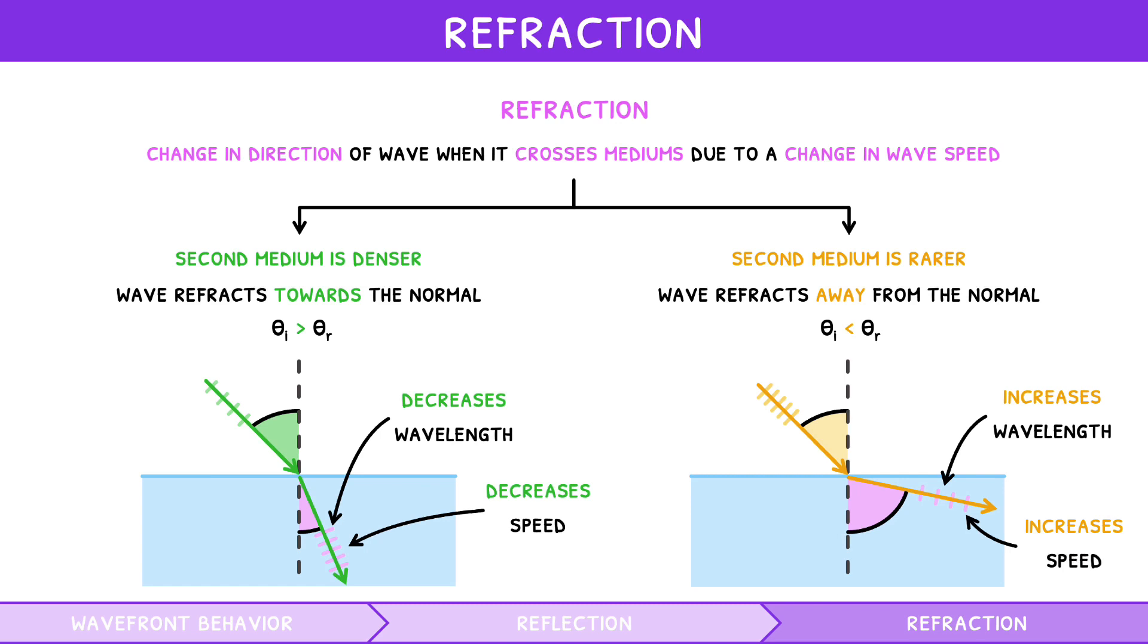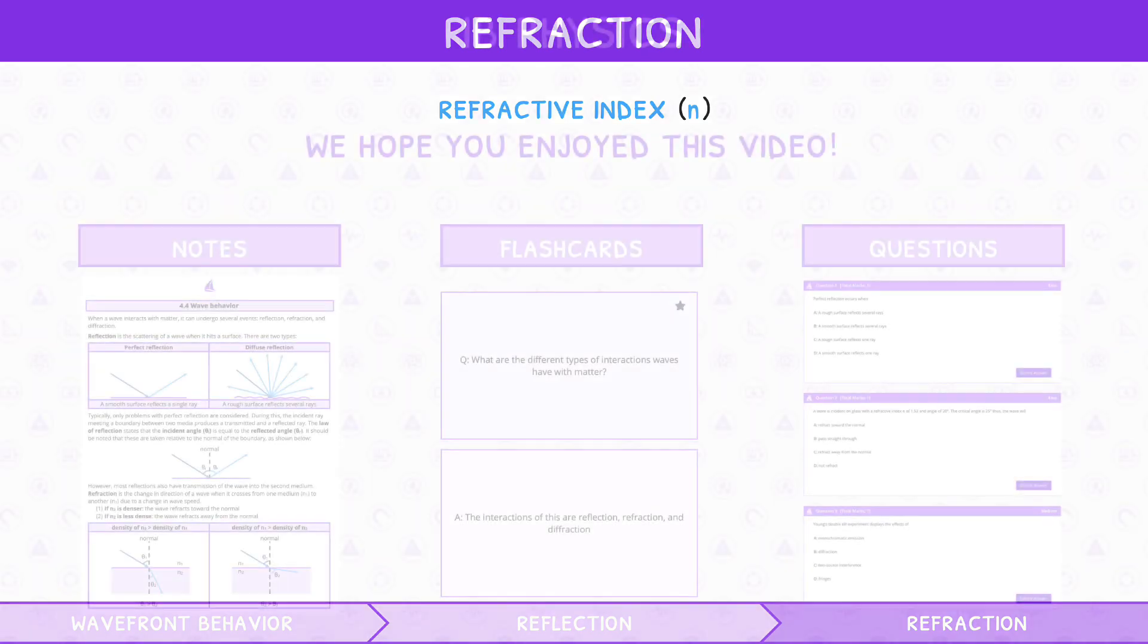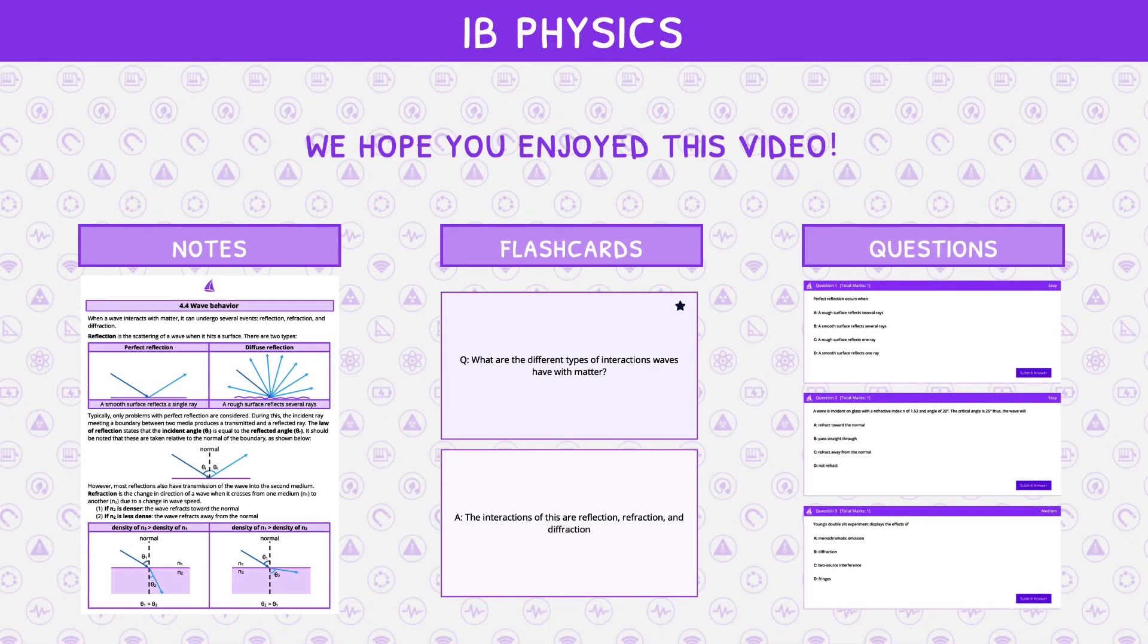So, how can this phenomenon actually be quantified? Well, the density of each medium is described as a constant n, called the refractive index. You've now reached the end of the preview for this IB science video. If you want to check out the full video, head over to our website and select a membership plan today.